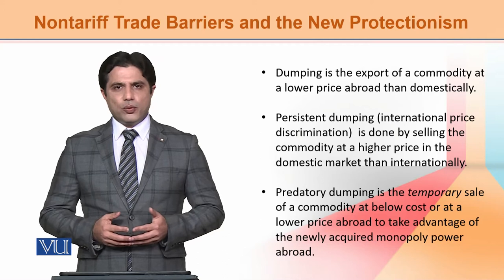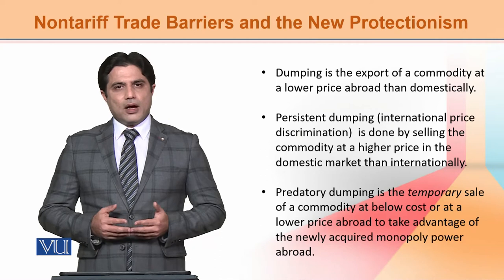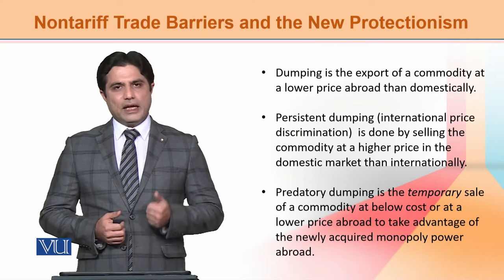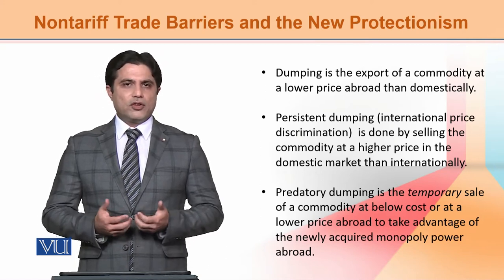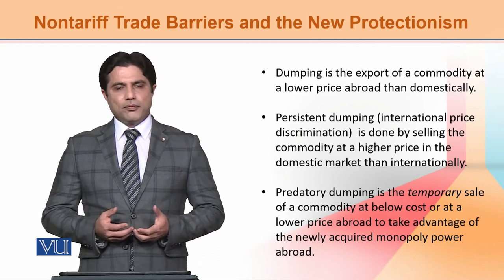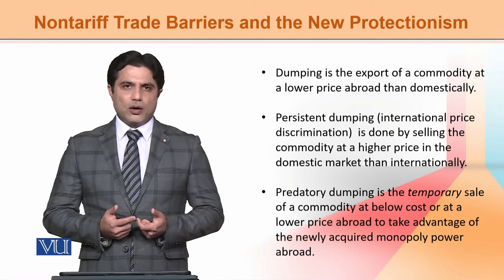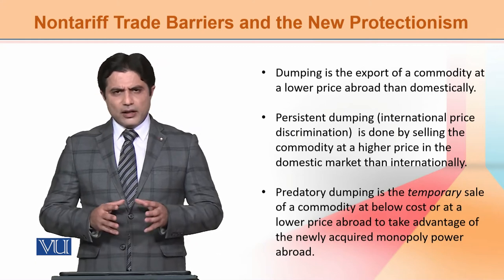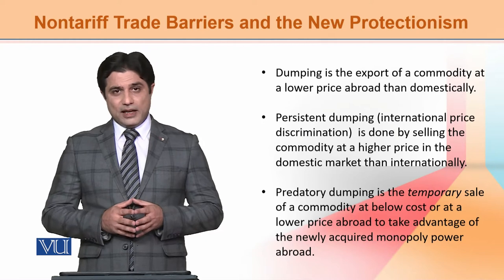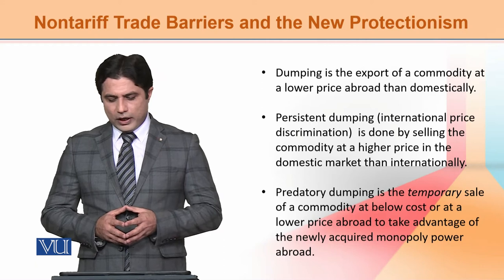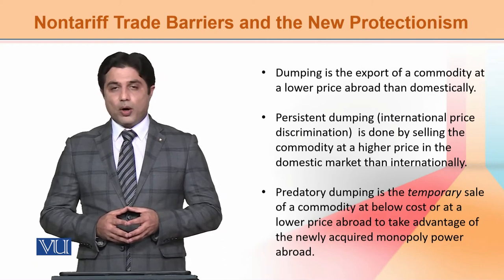The primary reason for predatory dumping is to achieve monopoly in the foreign market. Monopoly is a concept of microeconomics — only a single producer controls the market. In predatory dumping, the commodity is temporarily sold at a low cost or at a lower price abroad to take advantage of the newly acquired monopoly abroad.